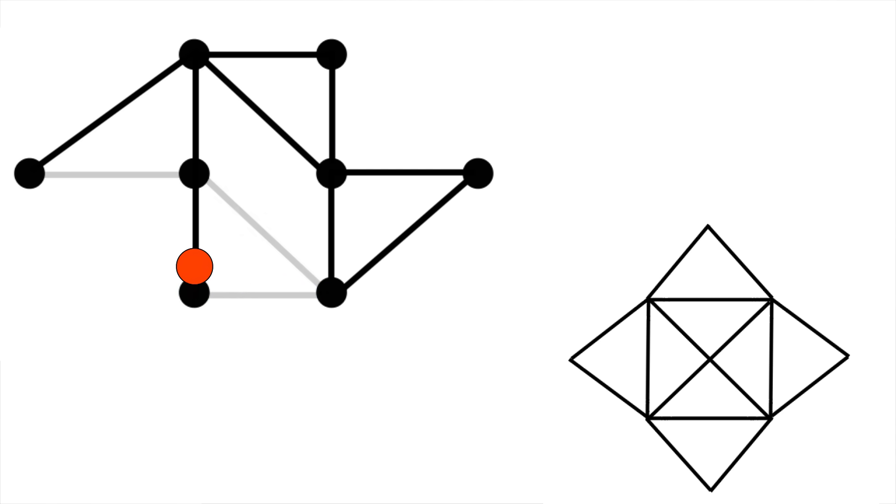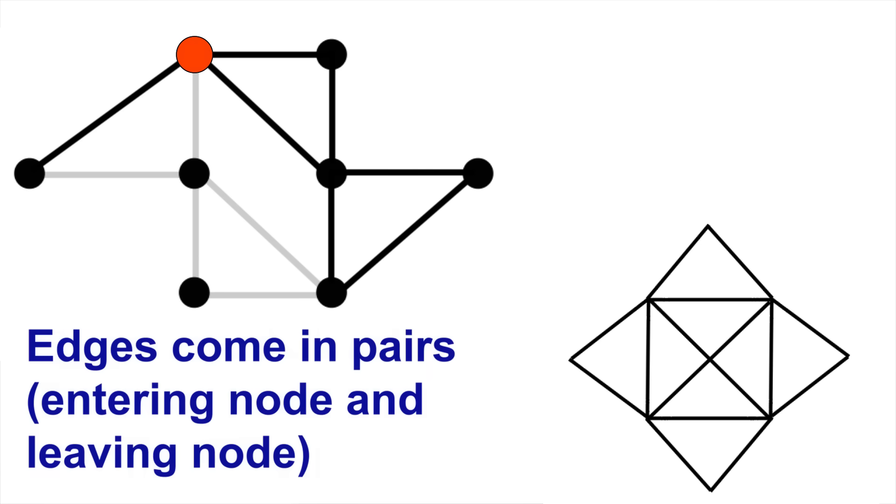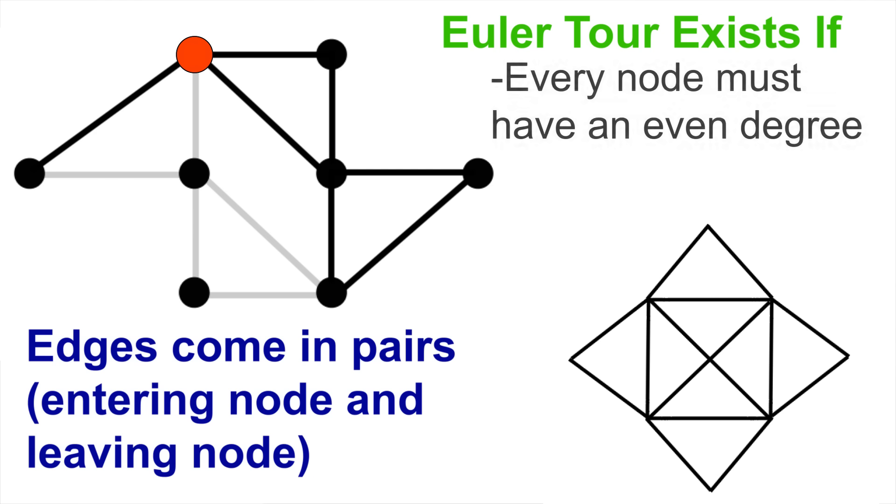And if we ever return to that same node, it must be via a new line and we must leave via another new line. Notice all of these come in pairs. So in order for an Euler tour to exist such that we never repeat an edge, every node must have an even degree. For every line that comes into a node, a different one needs to leave.